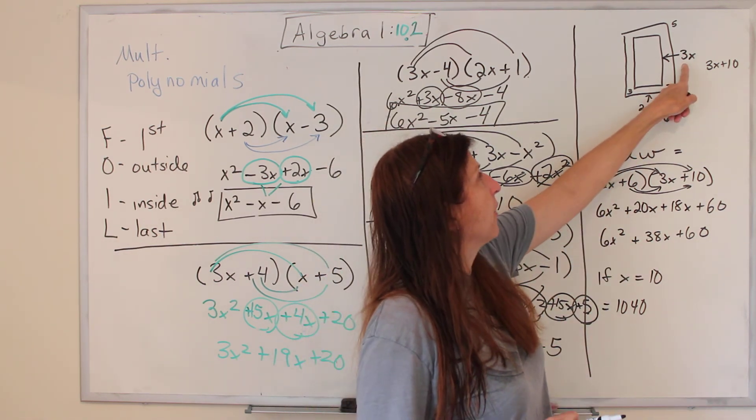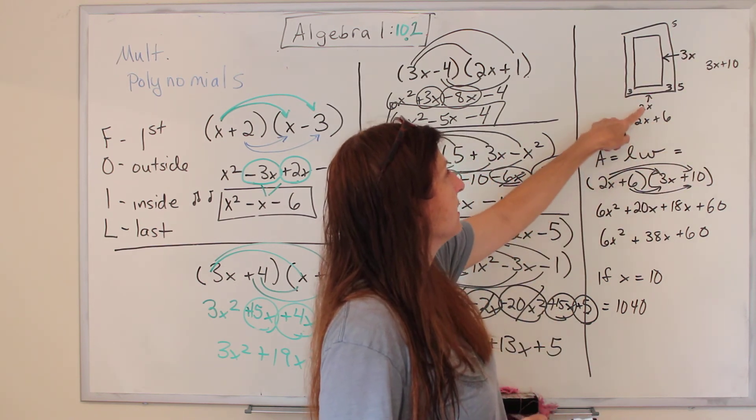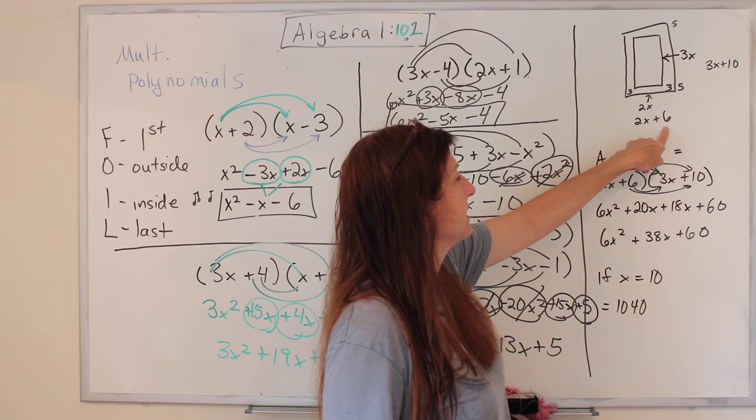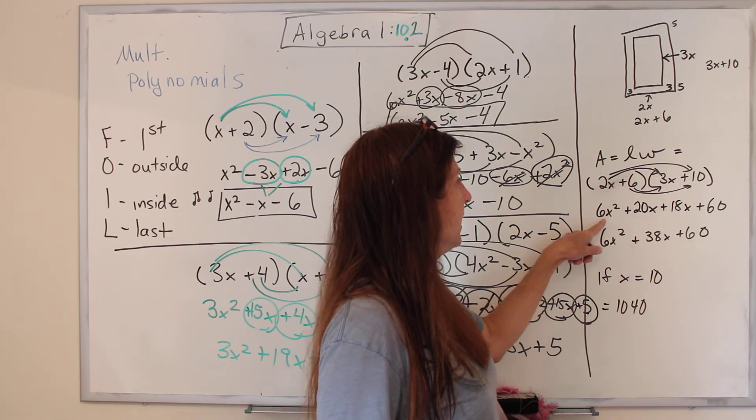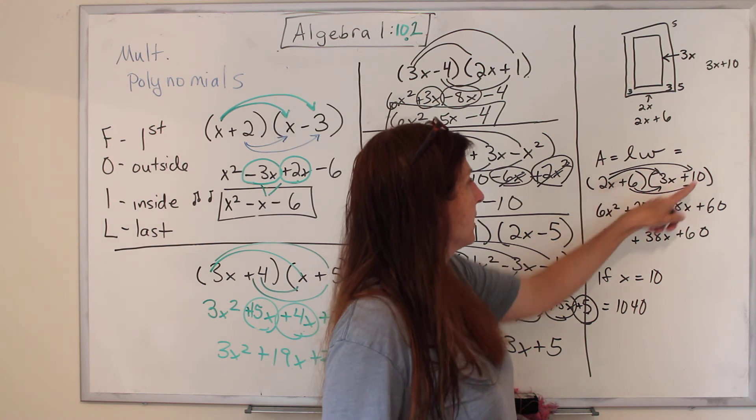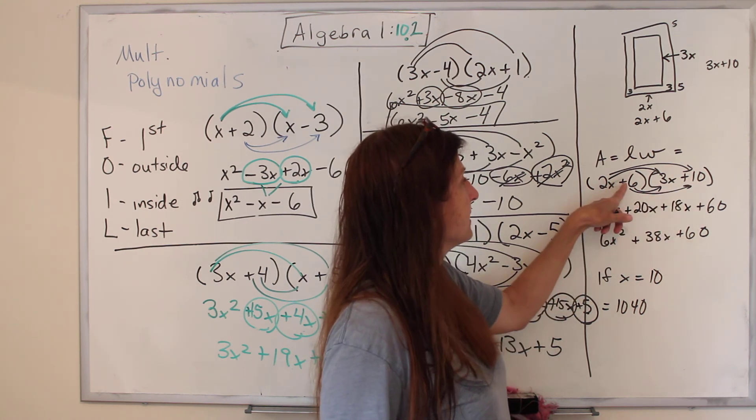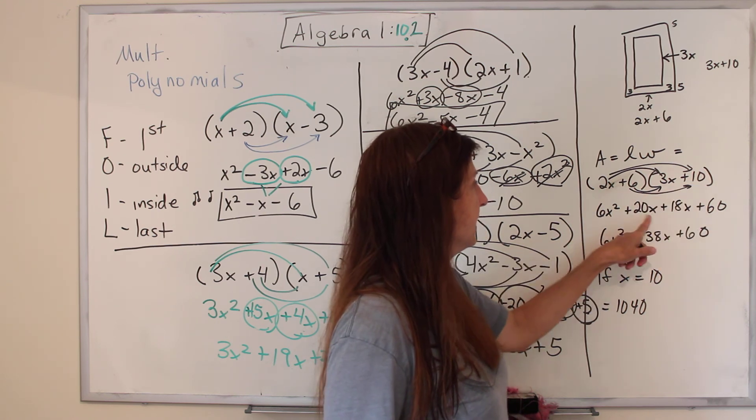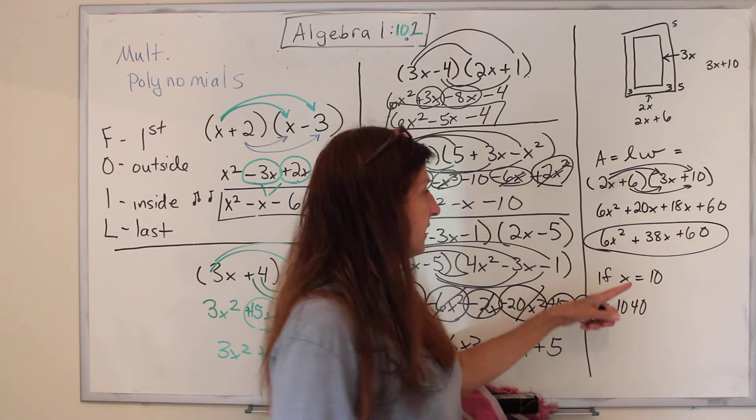So what you do, though, is you just say, you've got 3x plus 2 5's is plus 10. And on this side, it's 2x plus 2 3's is 6. Then you multiply them together. 2x times 3x is 6x squared. 2x times 10 is plus 20x. 6 times 3x is 18x. 6 times 10 is 60. You gather up these terms, and there's the answer. Nobody does this.